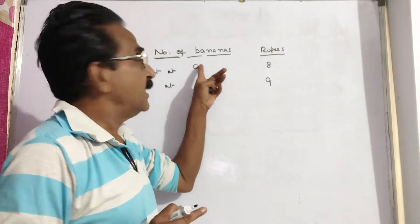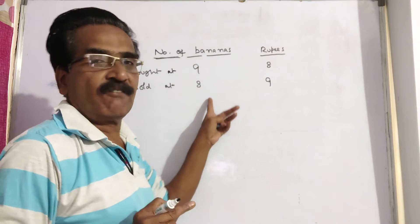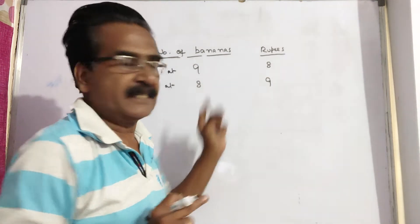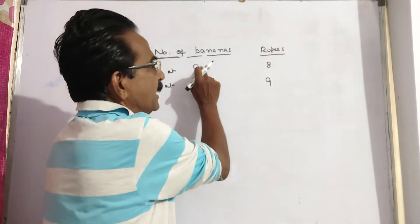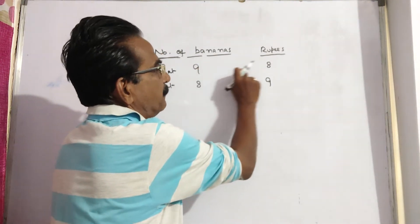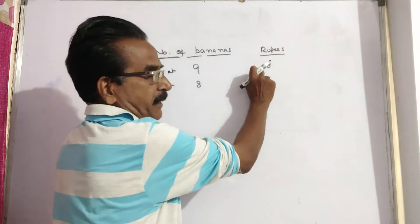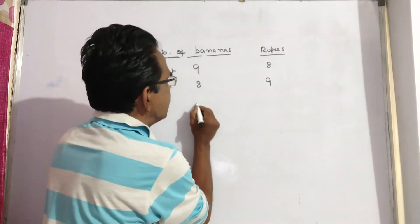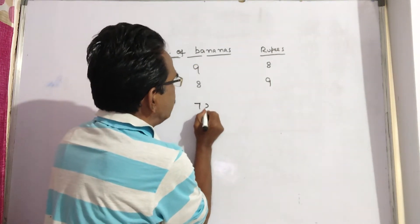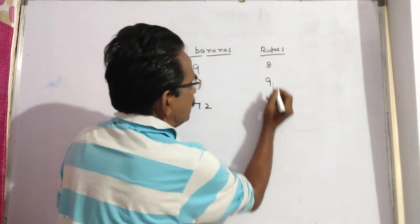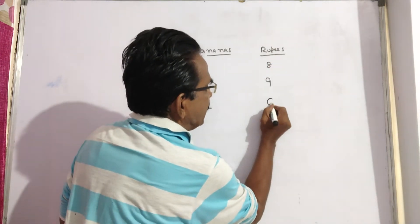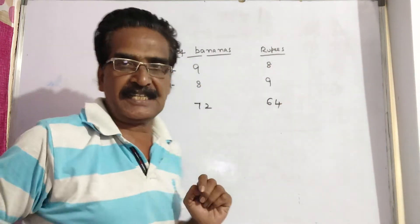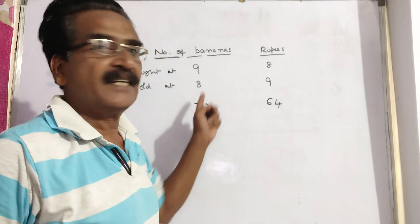Let us equalize the number of bananas in both statements. Let us multiply the first statement by 8. That means 9 × 8 = 72 bananas, and 8 × 8 = 64 rupees. This is the cost price of 72 bananas.